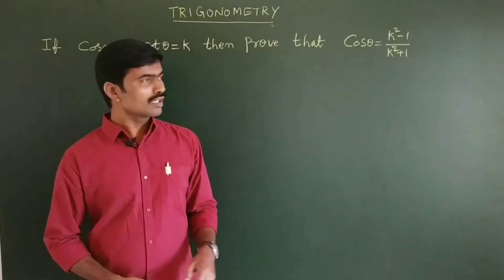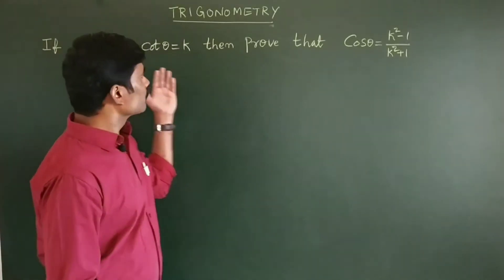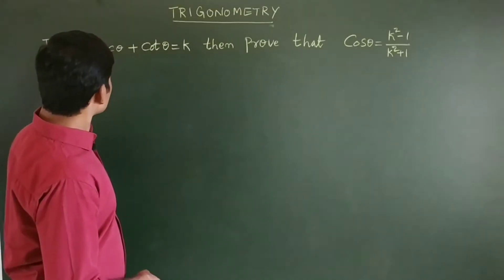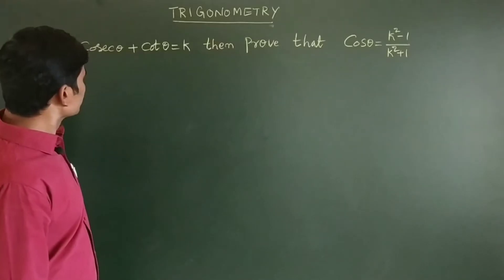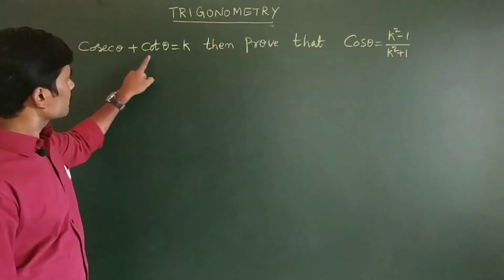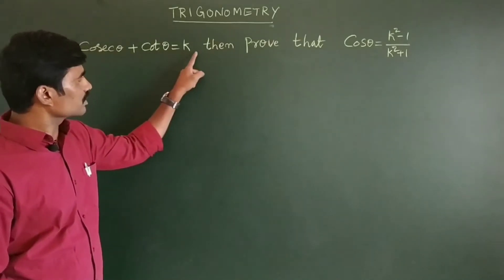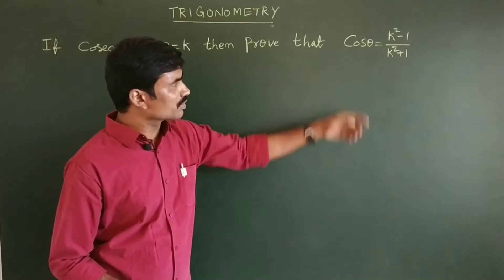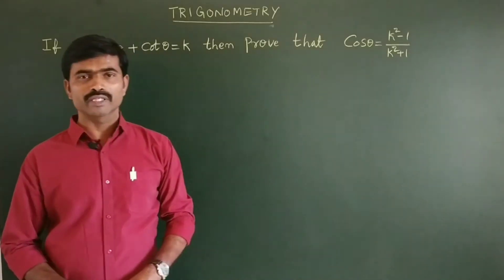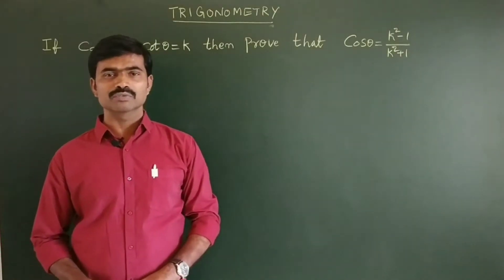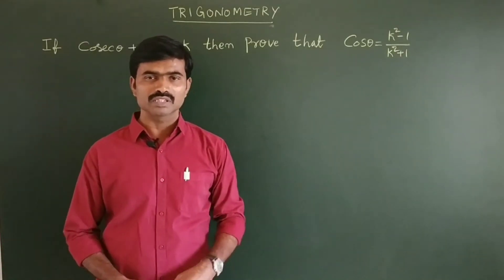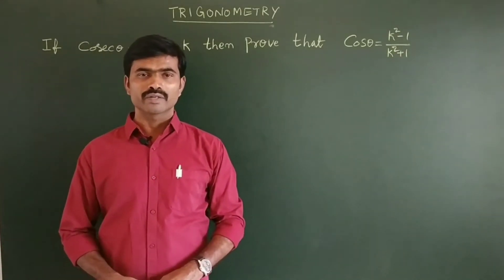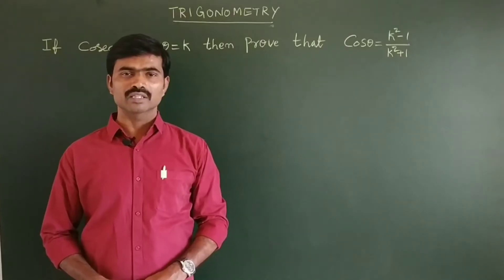In this video, we will learn how to prove this problem: if cosecant theta plus cot theta is equal to k, then prove that cos theta is equal to k squared minus 1 by k squared plus 1. This is an important problem of trigonometry for 10th class.